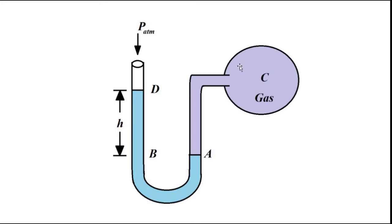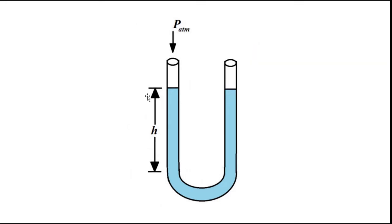There is a gas contained in this chamber C. Now, if both ends of this U-shaped tube are exposed to the atmosphere, in that case the level of mercury in both limbs will be equal, because both sides are at equal pressure — that is atmospheric pressure. Both heights of mercury in both limbs are the same, that is h.